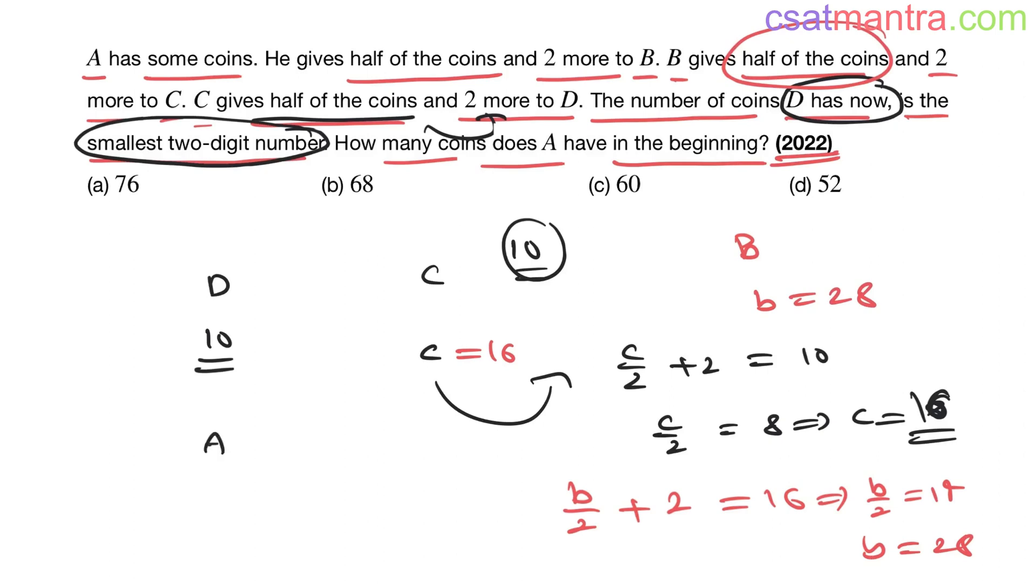Now A gives half of the coins. A has a number of coins. So half is A by 2 and two more. This is 28. So A by 2 is 26. A is 52. This is what we want, number of coins A has in the beginning. 52. Answer D.